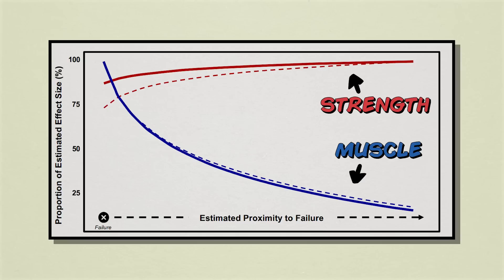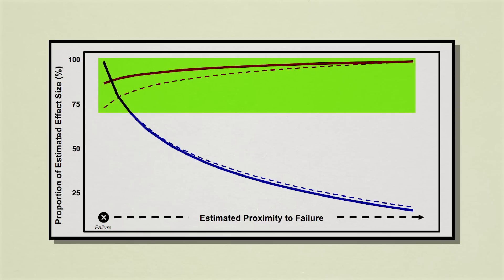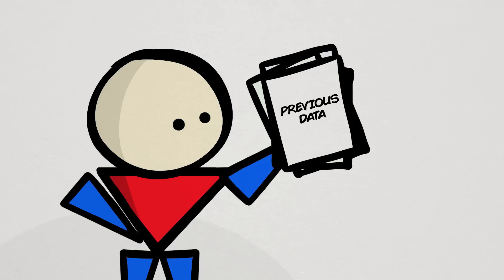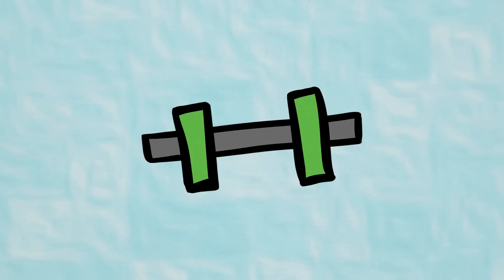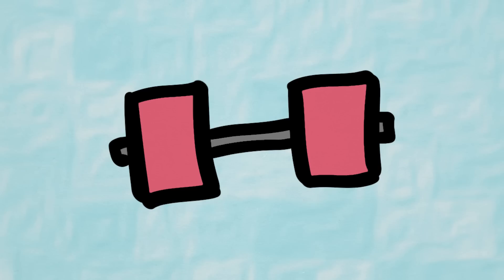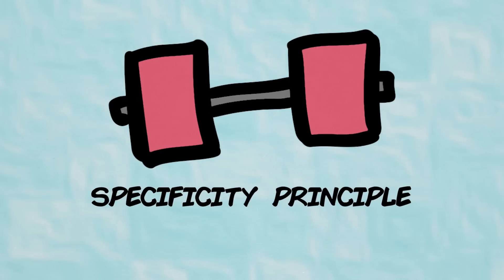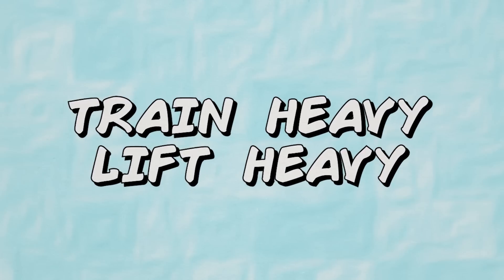The higher the line, the more gains, and the further right, the further from training to failure or having more reps in reserve. Based on this modeling, it proposes that you can achieve similar strength gains regardless of how far you train from failure. This finding is not too different from previous research, which most agree that the greatest mediator for strength is instead the load lifted, supported by the principle of specificity. In other words, to lift heavy, you gotta train heavy.